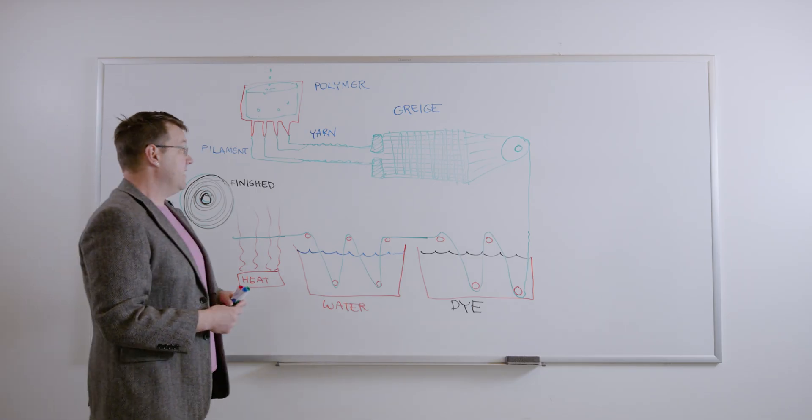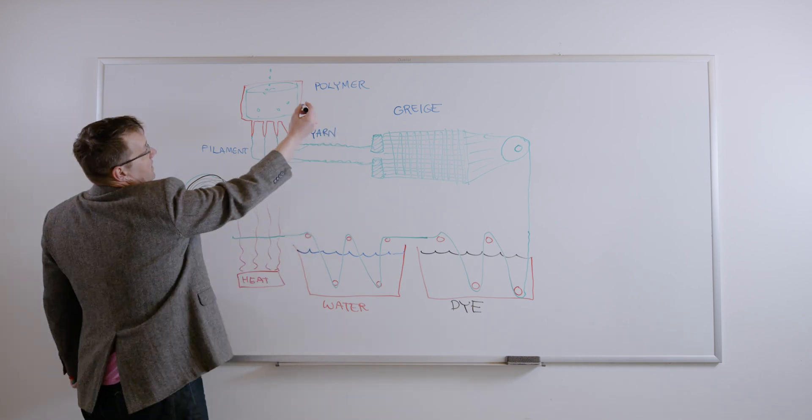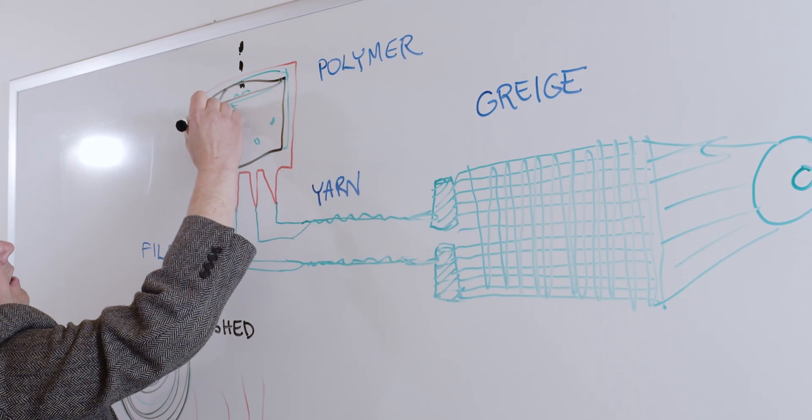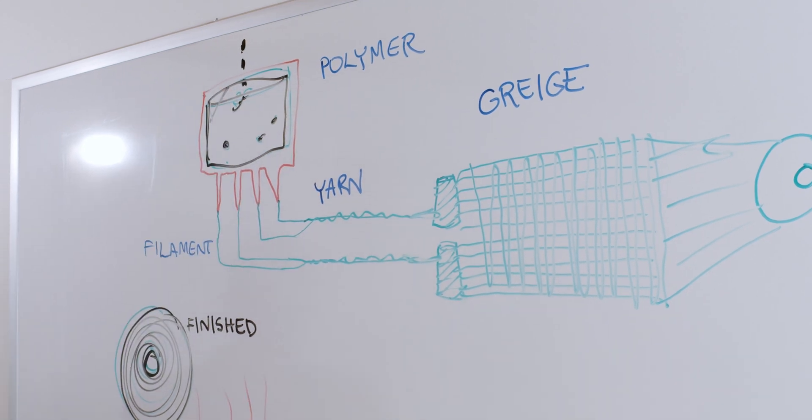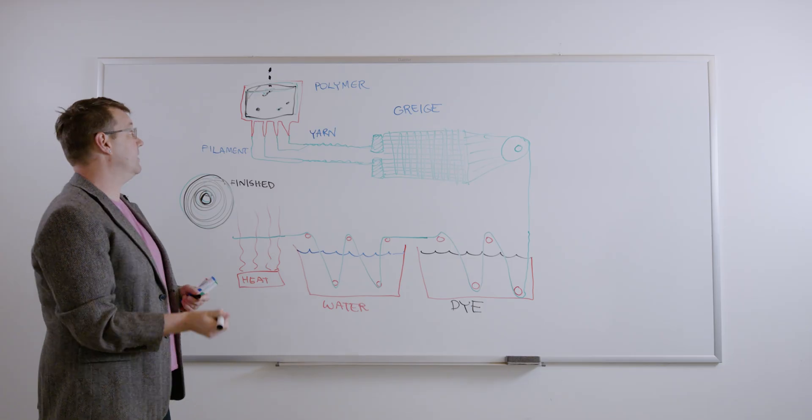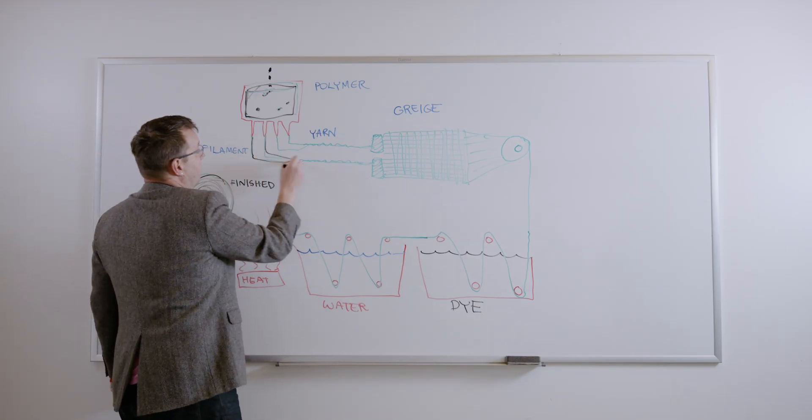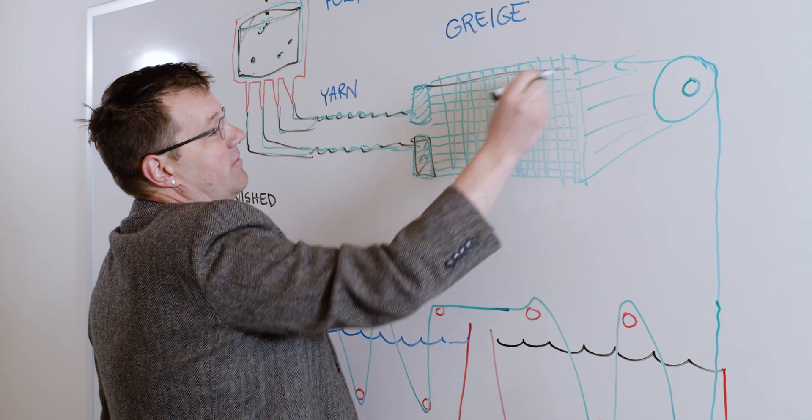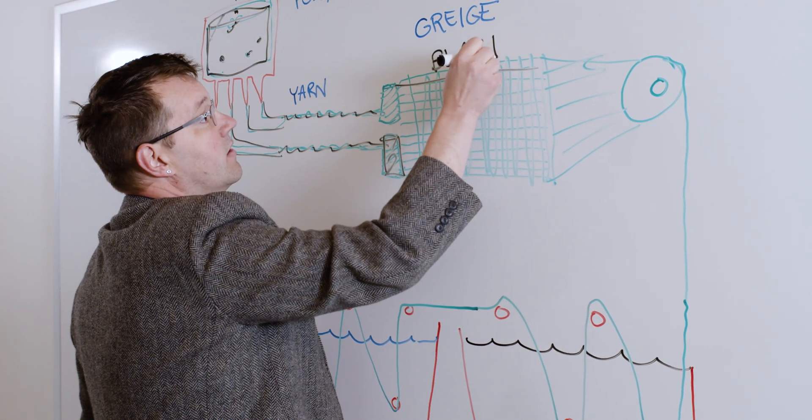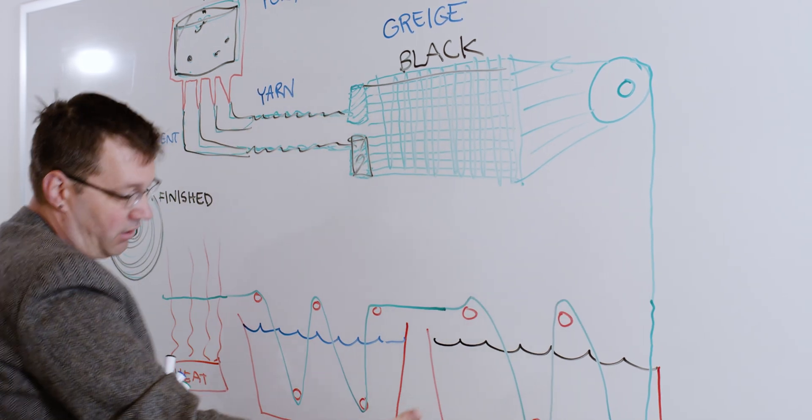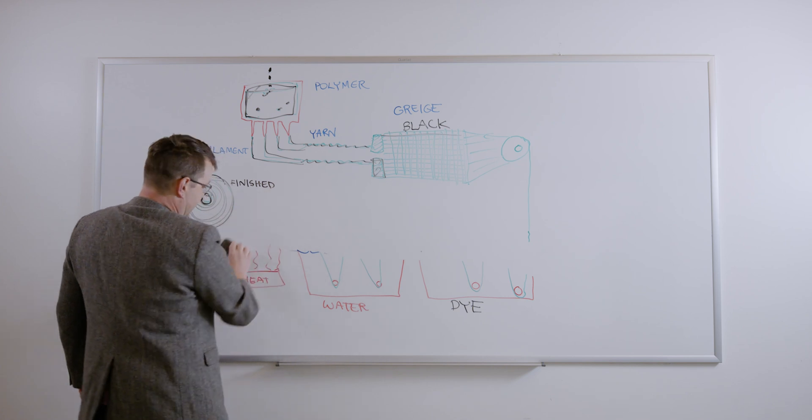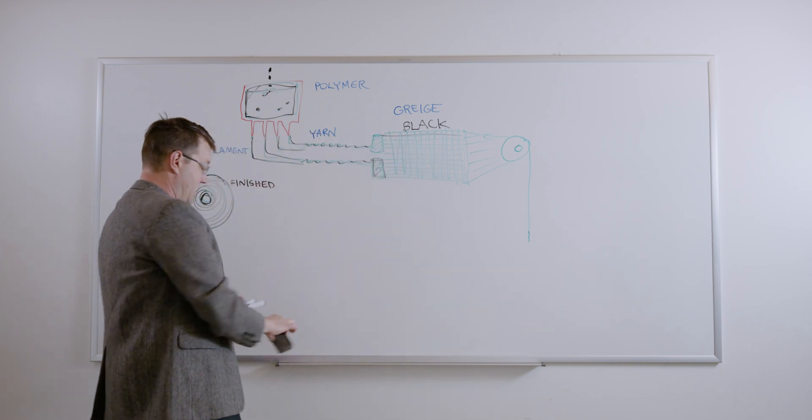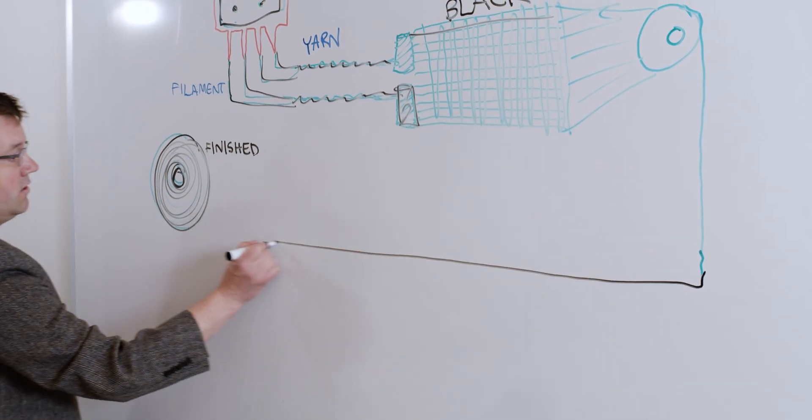So enter solution dye. What is solution dye? Solution dye means that we come up here to the polymer stage and we make this polymer black from the beginning. We color the plastic yarn before it's even extruded into filament. So now at this point we've got black filament, we got black yarn, we got black greige. It's black at this point. And then when we come down here, all of this dye process, all this heat and energy, all the rinsing, dyeing, drying - it's done. It's already black. Finished.